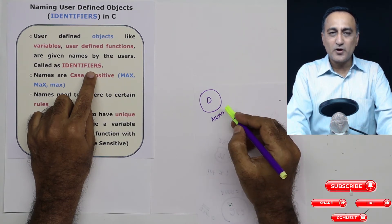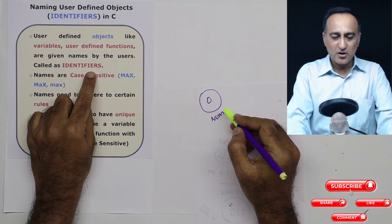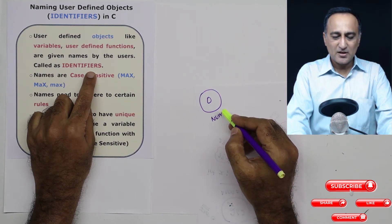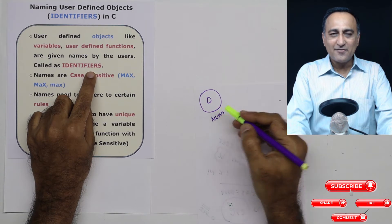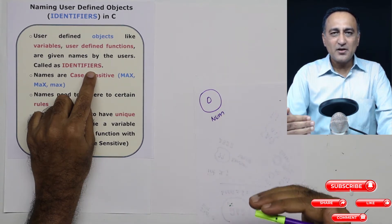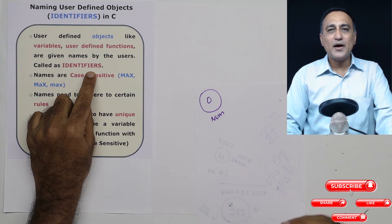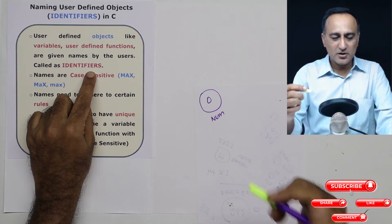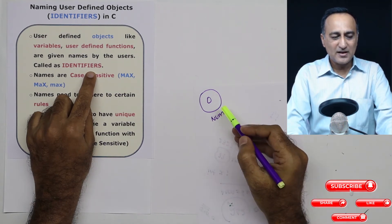There are certain rules for naming user defined objects or variables in C. They are called identifiers because when you give a name to a variable, you're able to identify a memory location. That's why it's called as an identifier.